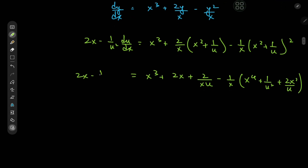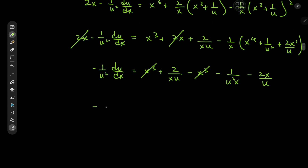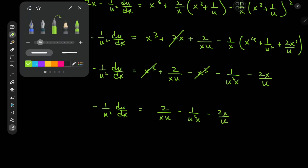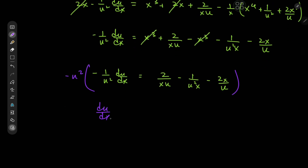Writing out the left-hand side, we see the 2x terms cancel. We're left with −(1/u²)(du/dx) = 2/(xu) − 1/(u²x) − 2x/u, after cancellation of the x³ terms and simplification.